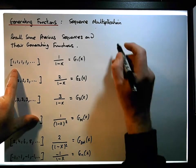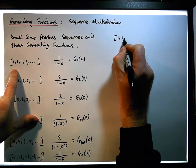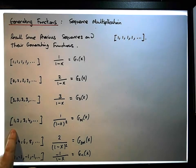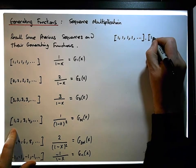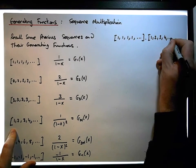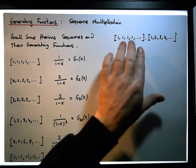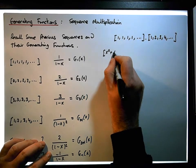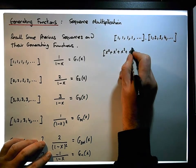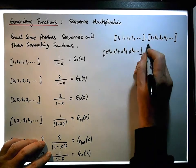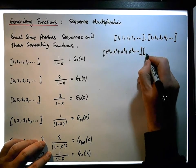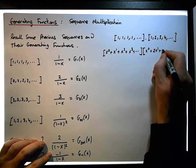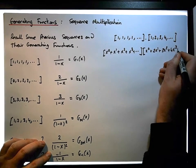So we're going to take the sequence 1, 1, 1, 1, ... and multiply it against the naturals, which is 1, 2, 3, 4, ... The power series for the constant ones is x⁰ + x¹ + x² + x³ + .... And the naturals have a power series which is 1·x⁰ + 2x¹ + 3x² + 4x³ + ....